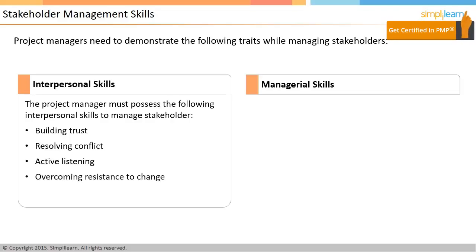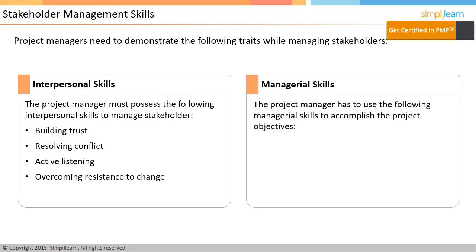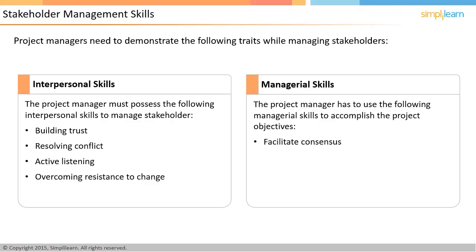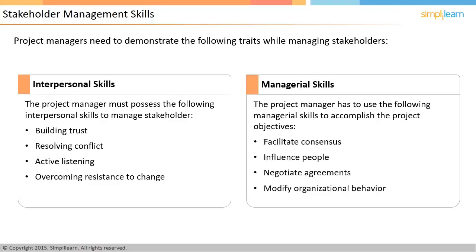Resistance to change is natural, and a project manager must know how to convert that into positive energy. Managerial skills that help accomplish project objectives include: building consensus among the group, ensuring widespread discussion to arrive at a path the group can buy into; the ability to influence people, often without necessarily being in a position of authority; skillful negotiation of agreements; and the ability to understand and modify organizational behavior to move the project in a certain direction.